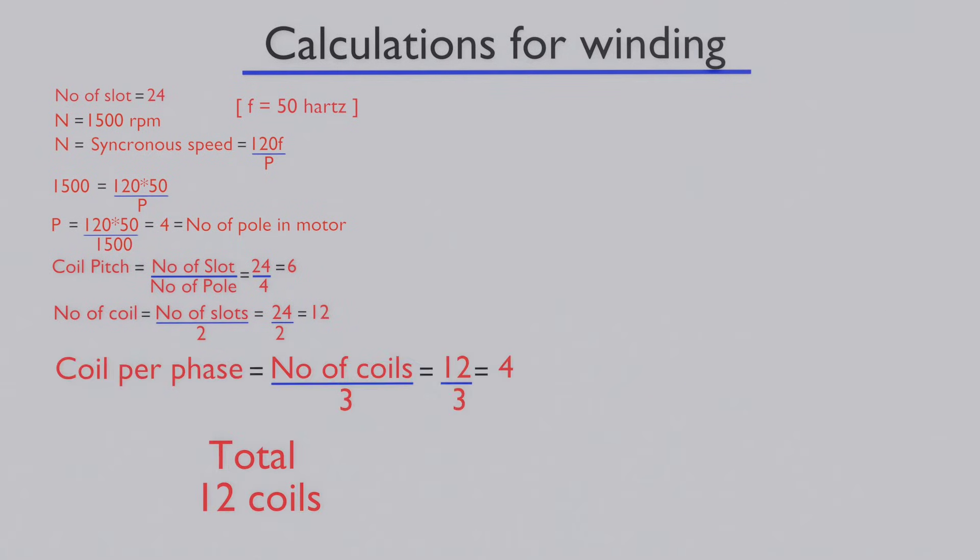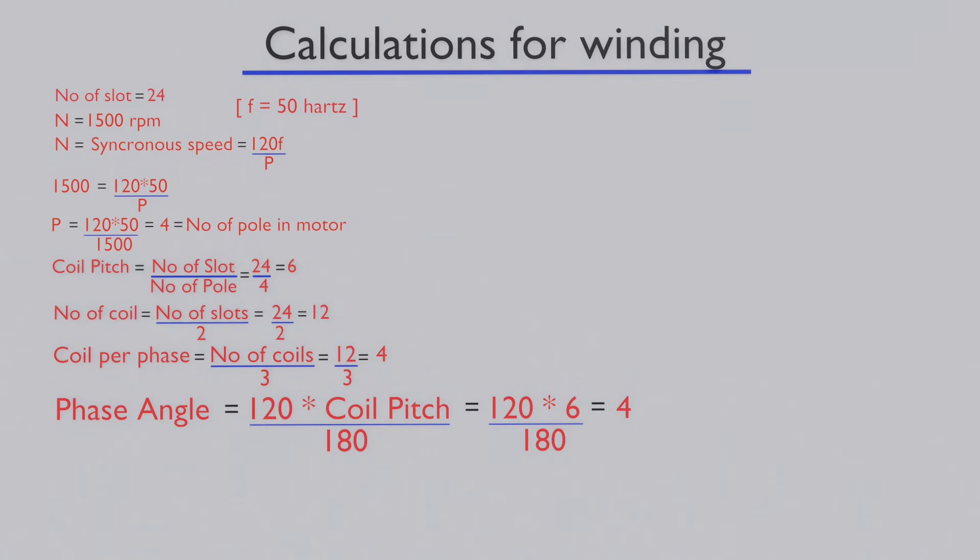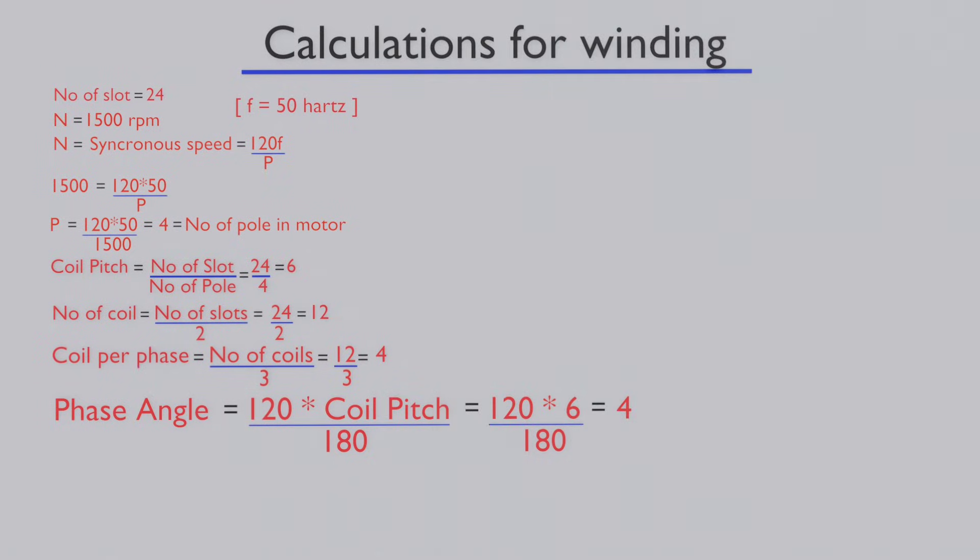This is a three-phase motor, so there are four coils for each phase. For making a three-phase induction motor self-starting, winding displacement is 120 degrees electrical for each phase. So the phase angle between two adjacent phases is four, according to formula.